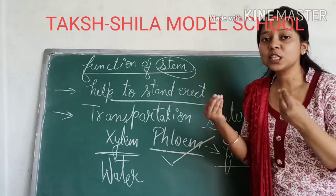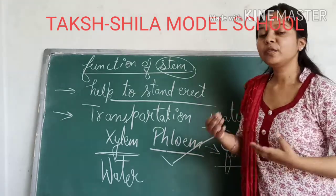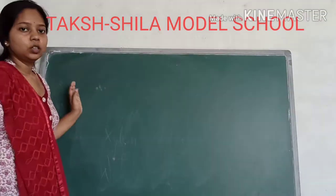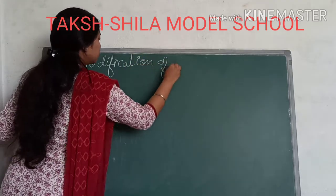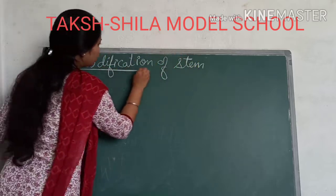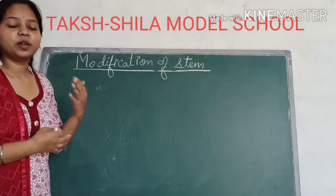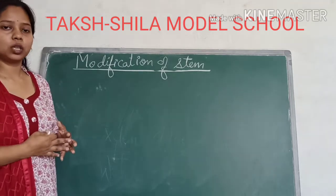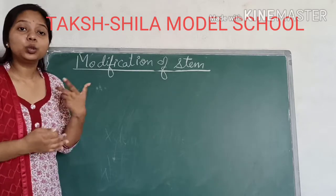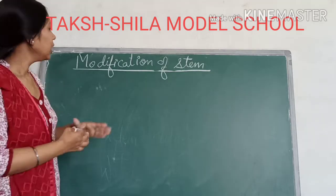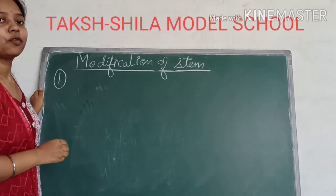These are the two main functions that every stem performs. Now we will look at some special functions — modifications that occur in the stem, due to which it begins to perform additional different functions. So let us look at the modifications of stem: how stem is modified to perform other functions. When a plant is in unfavorable conditions or has different characteristics, its stem and other organs get modified. We saw this in the case of roots too — how roots get modified and store food.